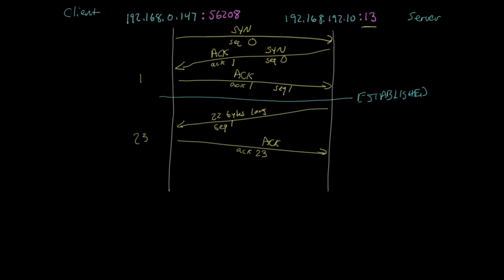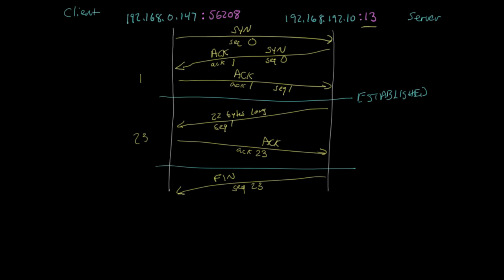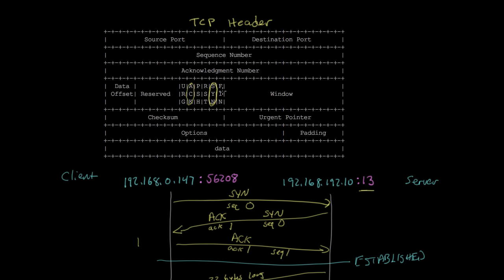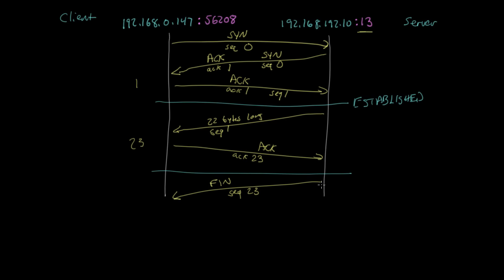At this point the server has sent the time, so the server is going to go ahead and disconnect. It sends a packet with the FIN bit set — sequence number 23, which is the next sequence number. The FIN bit is another flag in the TCP header whose purpose is to say that the connection is finished or that we want to disconnect. So the server sends a packet with the FIN bit set at sequence number 23.